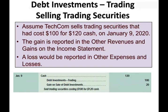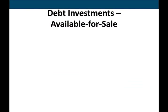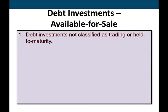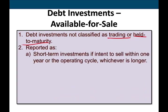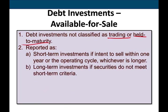The third category is available-for-sale debt securities. It's not held-to-maturity — we're not holding it until maturity. But we're not planning to sell it in the near future either, so it's somewhere in between. It's reported as short-term if intended to be sold within one year or the operating cycle, or long-term if it doesn't meet those criteria. It is valued at fair value.